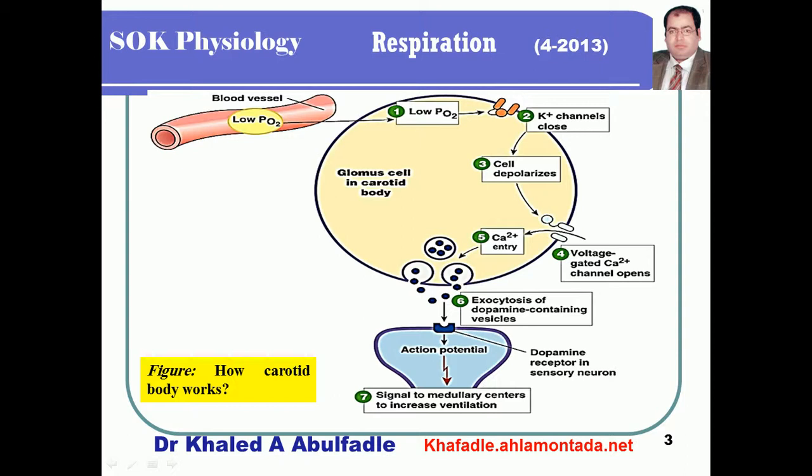Calcium influx triggers exocytosis of dopamine from the glomus cell, generating an action potential in the sensory neuron. This signal is transmitted from the carotid body through the carotid sinus nerve into the medullary respiratory center to increase ventilation.